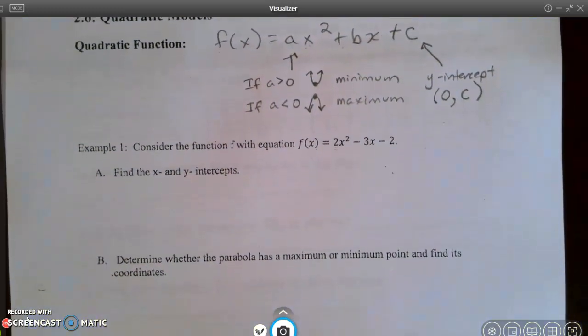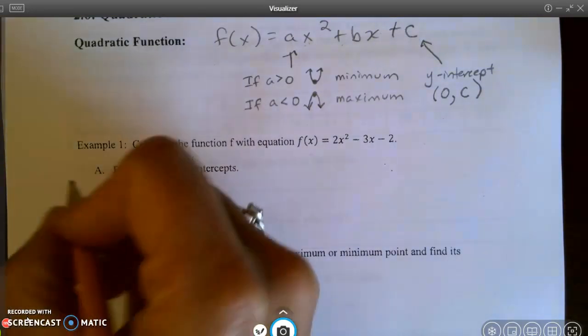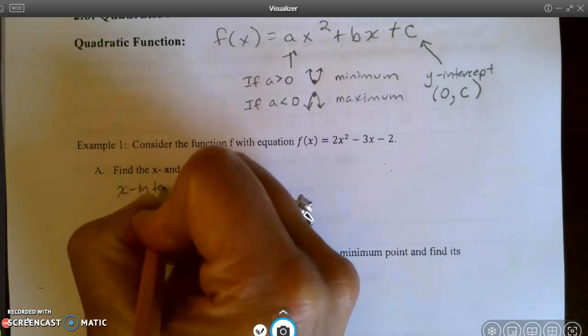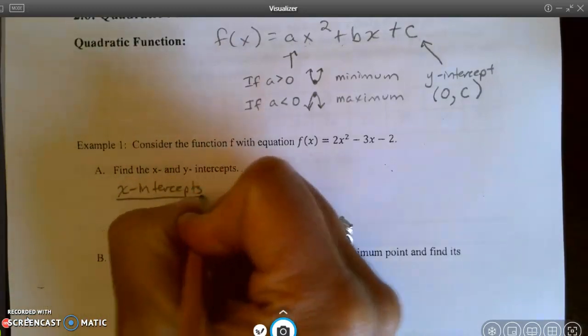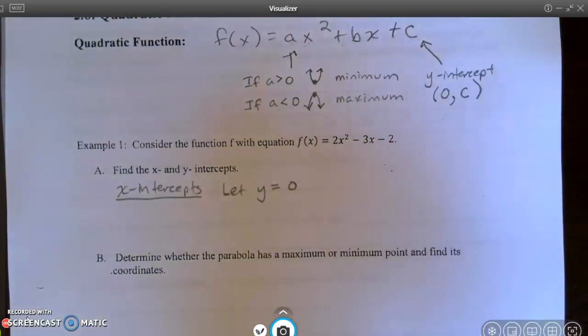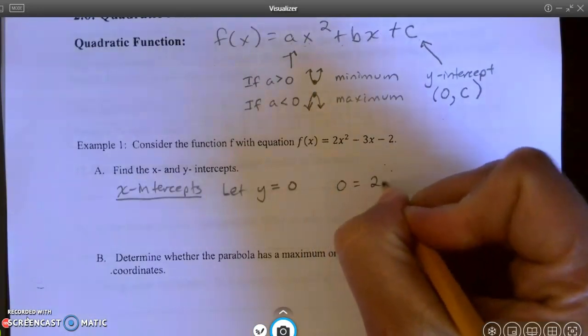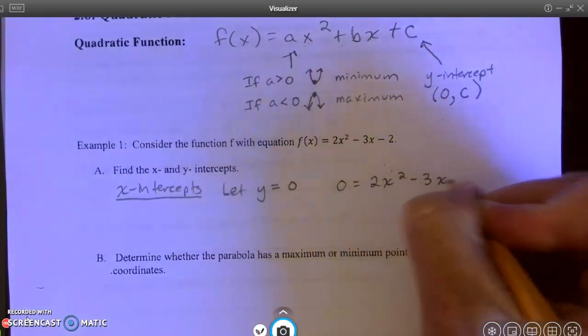Let's consider the quadratic function f(x) = 2x² - 3x - 2. Find the x and y-intercepts. When you're looking for x-intercepts, that means you're going to let y equal zero, because it's where it crosses the x-axis. On the x-axis, every ordered pair is some number comma zero, because the y-coordinate is zero. So let y equal zero. So we would say that 0 = 2x² - 3x - 2.